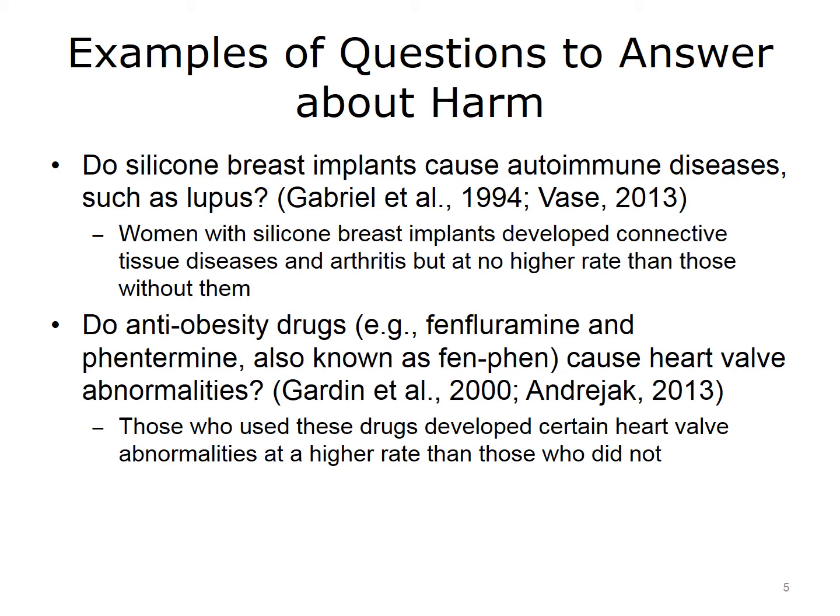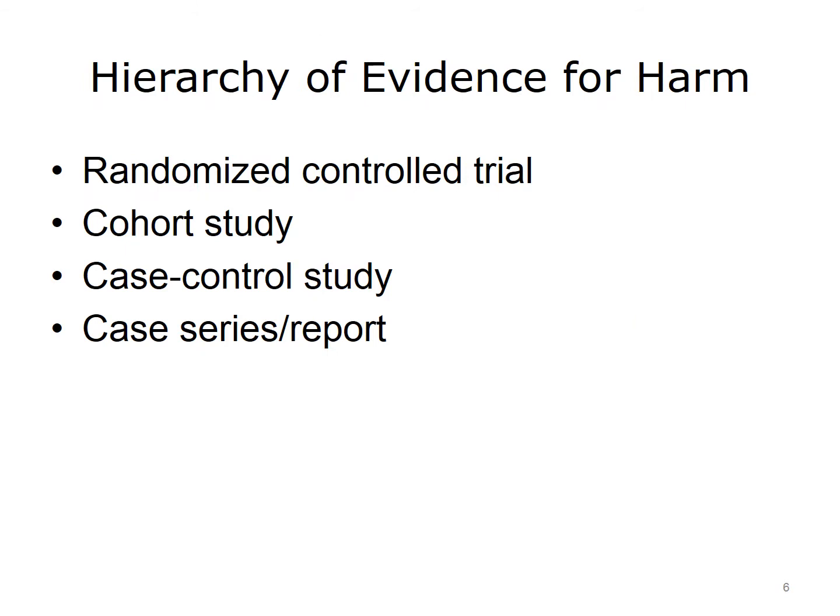Another question that came up in the 1990s was whether a number of anti-obesity drugs on the market at the time, such as fenfluramine and phentermine, also called fen-phen, caused problems such as heart valve abnormalities. It turned out that those who used the drugs actually did develop certain heart abnormalities at a higher rate than those who didn't use the drugs.